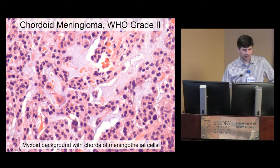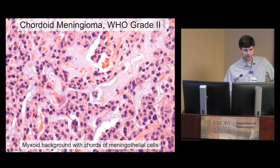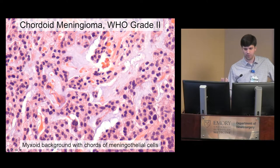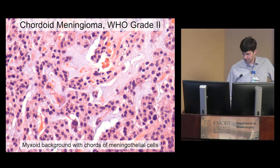A cordoid meningioma is also WHO grade 2 by definition. Cordoid means it looks like a chordoma — it has a bluish myxoid background with cells running together in cords. You have to hunt around to find areas with whorls that confirm it's a meningioma. This would be grade 2 by definition.